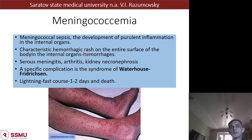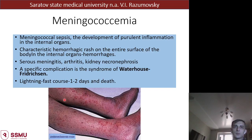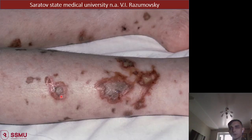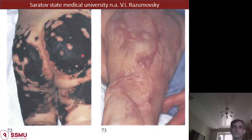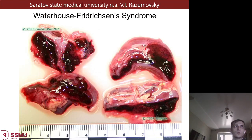Meningococcemia manifests like sepsis and is characterized by hemorrhagic rash on the entire body surface. The specific complication is Waterhouse-Friderichsen syndrome, which has a lightning-fast course - death may occur within the first two days. Waterhouse-Friderichsen syndrome is associated with hemorrhage into the adrenal glands.